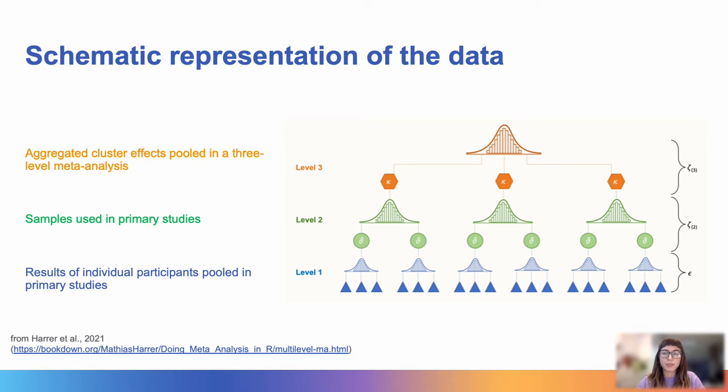This is a helpful schematic representation of the structure of the data. From the image, which I have borrowed from one of the recommended resources, the three-level organization of the data becomes clear. So here, we have the results of individual participants that are pooled in primary studies. Here, in level 2, we can see that different primary studies use the same sample. And here, we have level 3, where the aggregated cluster effects are pooled in a three-level meta-analysis.